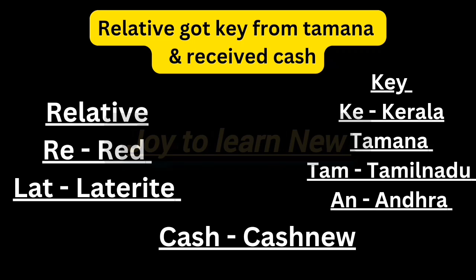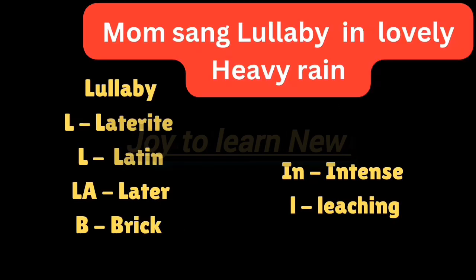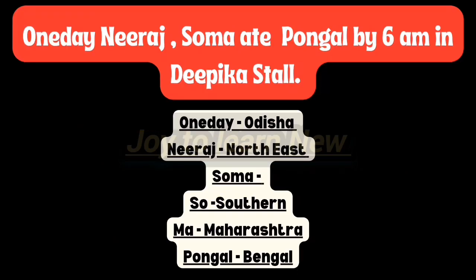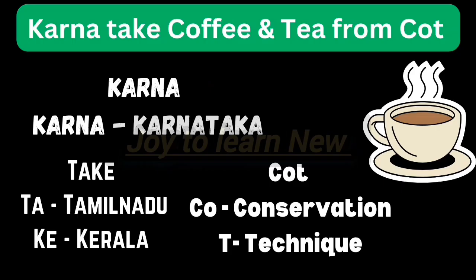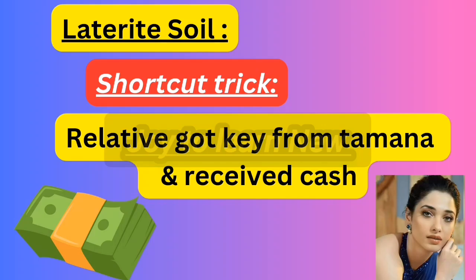Revising all shortcuts: (1) 'Mom sang lullaby in lovely rain.' (2) 'One day Neeraj and Soma ate Pongal by 6 a.m. in Deepika stall.' (3) 'HR send SMS to Pooja Pradeep.' (4) 'Karna take coffee and tea from cot.' (5) 'Relative got key from Tamanna and received cash.'